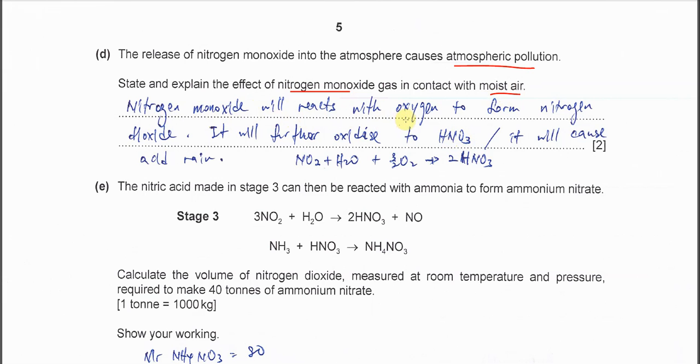It's easily oxidized to form nitrogen dioxide. Nitrogen dioxide is further oxidized together with moisture to form HNO3. But this HNO3 is not really the acid rain.